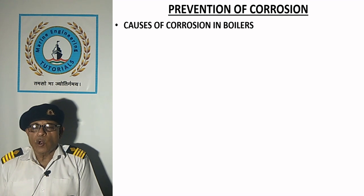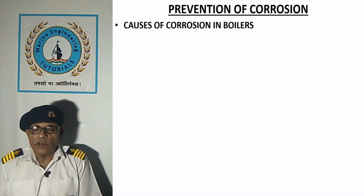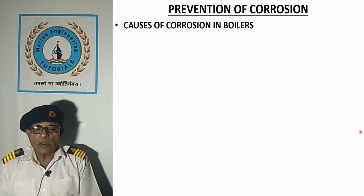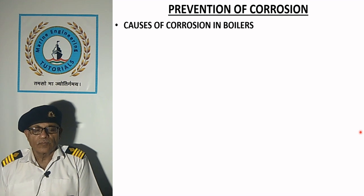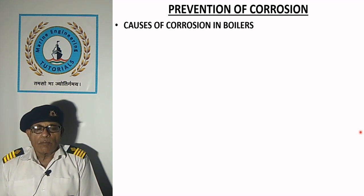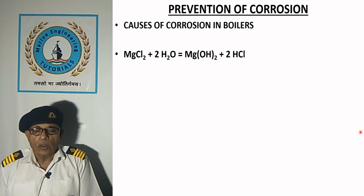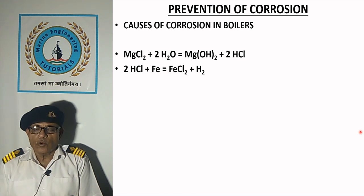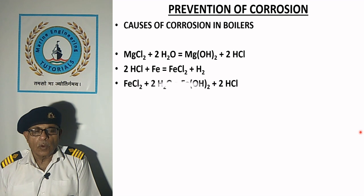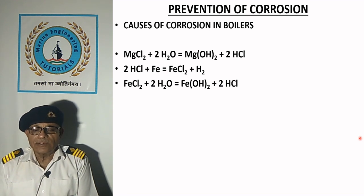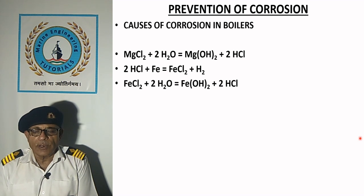Causes of corrosion in boilers: magnesium chloride, calcium bicarbonate, dissolved oxygen, and use of vegetable or animal oil for lubrication are responsible for corrosion in boilers. Magnesium chloride is hydrolyzed to form hydrochloric acid, which starts corrosion of steel in the boiler. Hydrochloric acid is regenerated by further reaction and starts a corrosive cycle. HCl is neutralized by maintaining reserved alkalinity in boiler water by calcium carbonate, reserved phosphate and caustic soda.